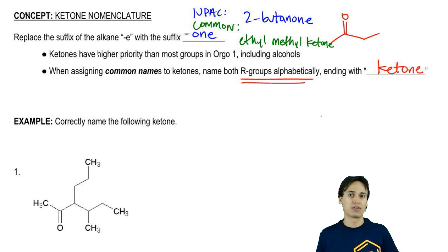Definitely use IUPAC for more complex ketones and it's okay to use common names for the easier to name ones, the smaller ketones.